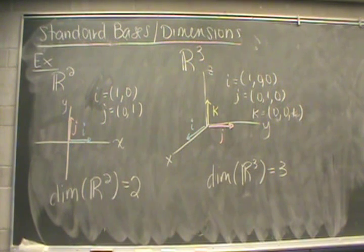For R^3, we have a similar idea. We just add k. So we have i, j, and k as our standard unit vectors. They run along the x, y, and z axes, respectively. So the dimension of R^3 would be equal to 3. Note that i, j, and k form a linearly independent set, and they span all of R^3.